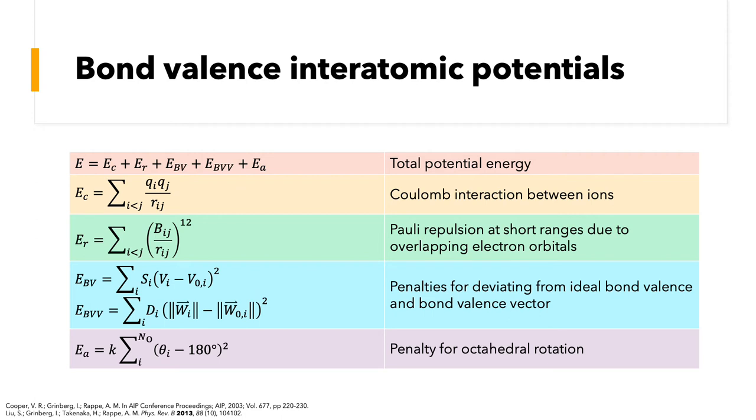Using these concepts, we cast them into a mathematical form, which yields the following potential energy function. The total potential energy is the sum of the Coulomb interaction between ions, E sub C, the short-range polyrepulsion between atoms, E sub R, the bond valence and bond valence vector energy penalties, E sub BV and E sub BVV, which I'll describe in a moment, and a harmonic angle potential, E sub A, that penalizes octahedral rotation.